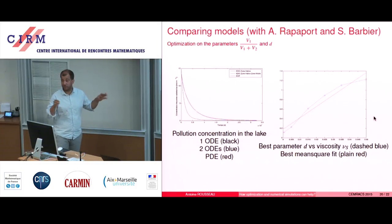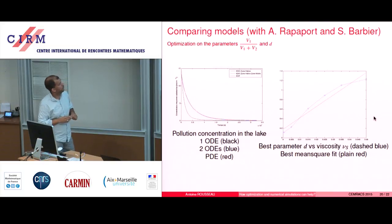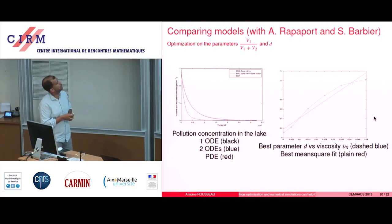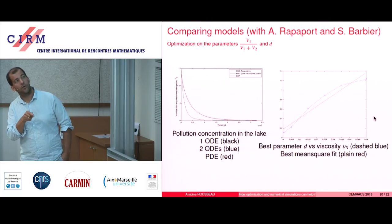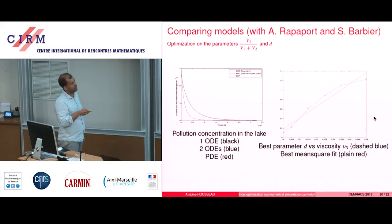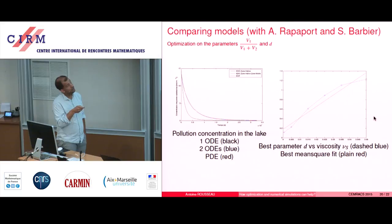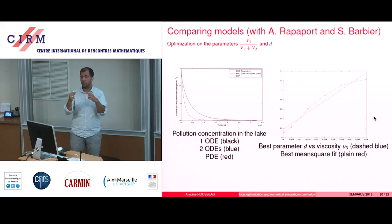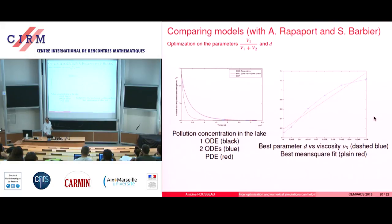So one ODE is bad. The PDE provides some kind of best ODE model in a way. But with two ODEs, you can really reach a very good comparison with the PDE. And on the right, just for information, you have the evolution of D — the diffusion parameter between the two zones — with respect to the true viscosity of the PDE model, nu_S. And it's almost linear, which is not surprising. So when you change the value of the viscosity, which defines the two zones, you have to change the parameter D, which computes the exchanges between the two zones.